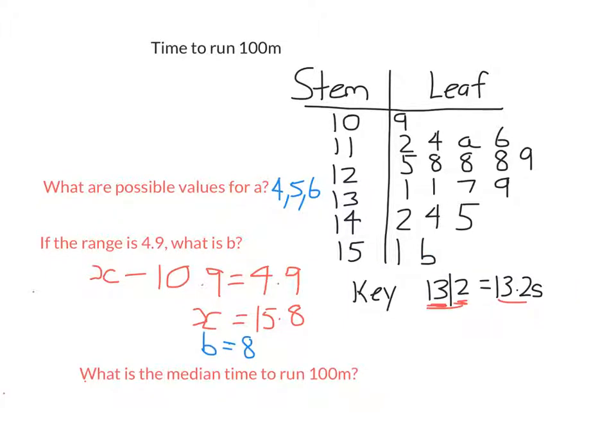So now we're asked the median time to run 100 meters. Now I still don't know what A is. I found what B is from some information given, but I still don't know whether this is 4, 5, or 6. So that would affect what the mean is, but it won't affect the median because the median only involves the middle score. So there are actually 19 scores in this stem and leaf plot. So the median will be like halfway there. It'll be the 10th score.